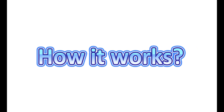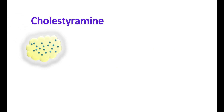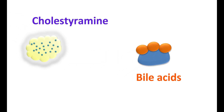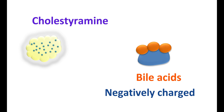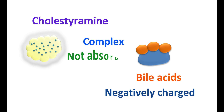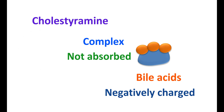Now let us see how it works. Cholestyramine interacts with bile acids, which are negatively charged compounds that form salts with sodium or potassium. Cholestyramine, on the other hand, is a positively charged resin polymer, so it can interact with bile acids to form an insoluble complex that is not readily absorbed. Therefore, in the presence of cholestyramine, bile acids are excreted into the feces.